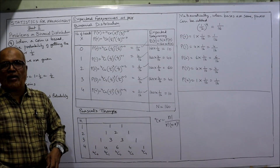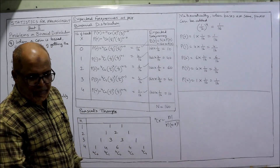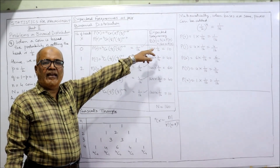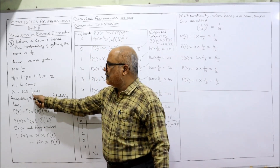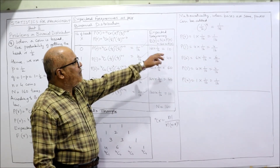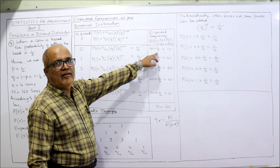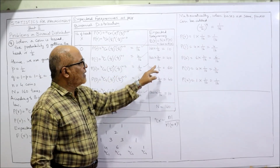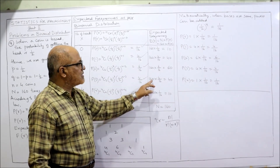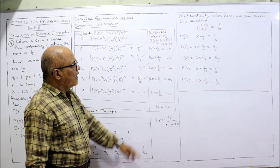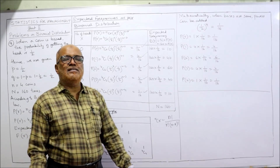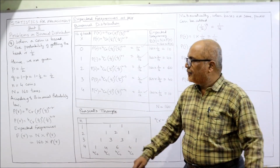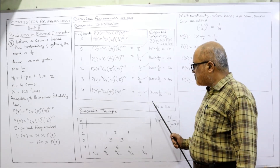Now for the expected frequencies, we multiply each P(r) by capital N = 160. E(0) = 160 × 1/16 = 10. E(1) = 160 × 4/16 = 40. E(2) = 160 × 6/16 = 60. E(3) = 160 × 4/16 = 40. E(4) = 160 × 1/16 = 10. Adding these up: 10+40+60+40+10 = 160, which matches the total actual frequency. The actual frequency total and expected frequency total must be the same.